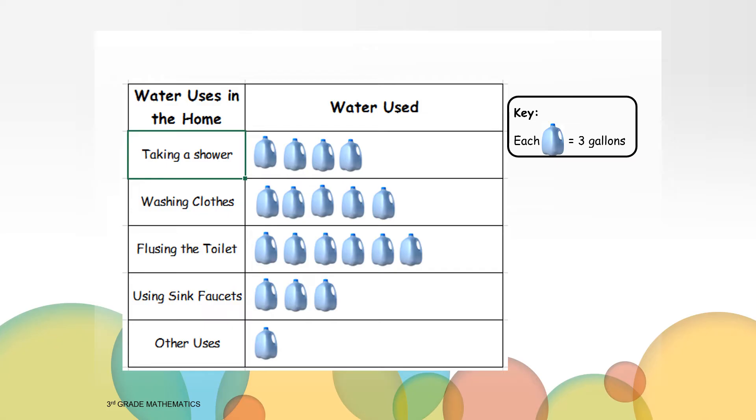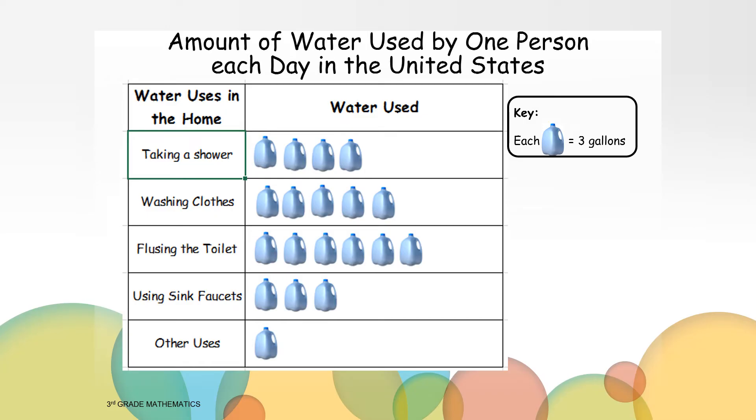According to the key, each picture is equal to three gallons of water. What is the last thing that's missing from our pictograph? Yes, we still do not have a title for our pictograph. What would be a good title for this pictograph? The title is Amount of Water Used by One Person Each Day in the United States.